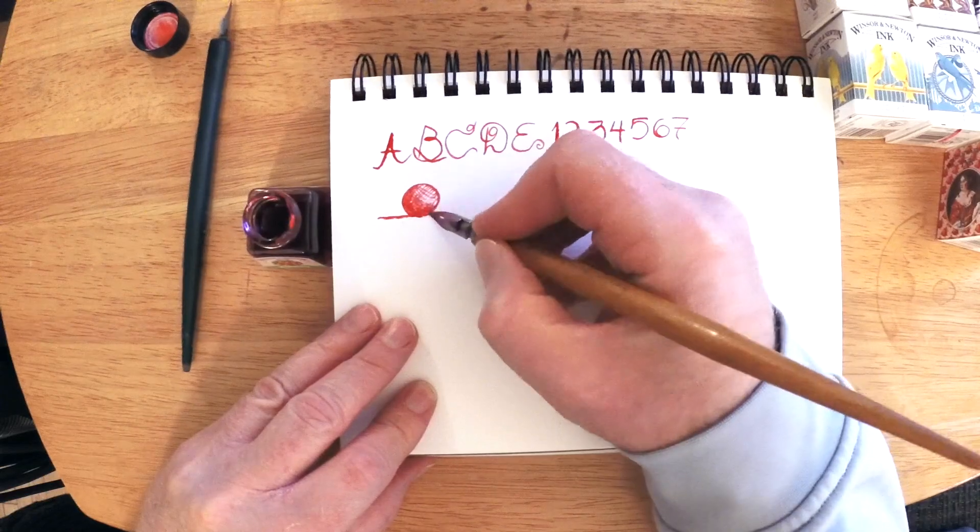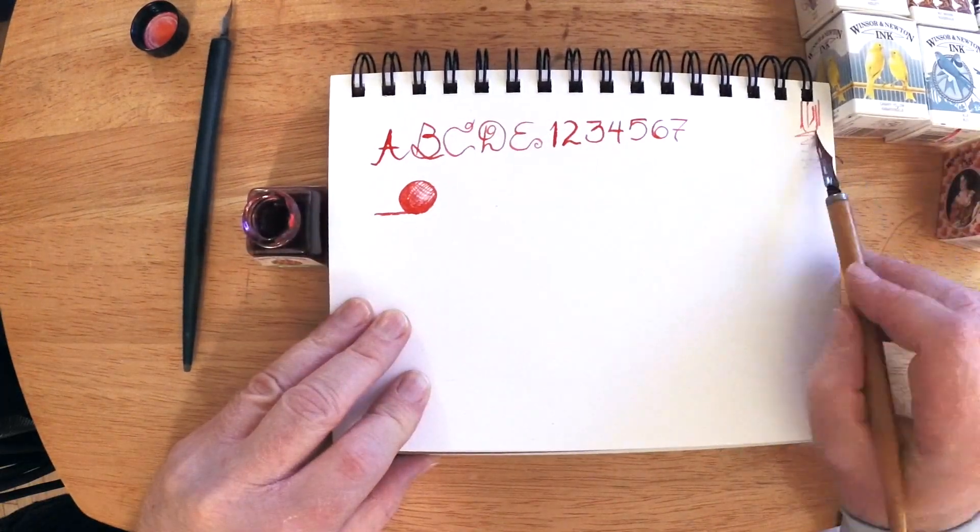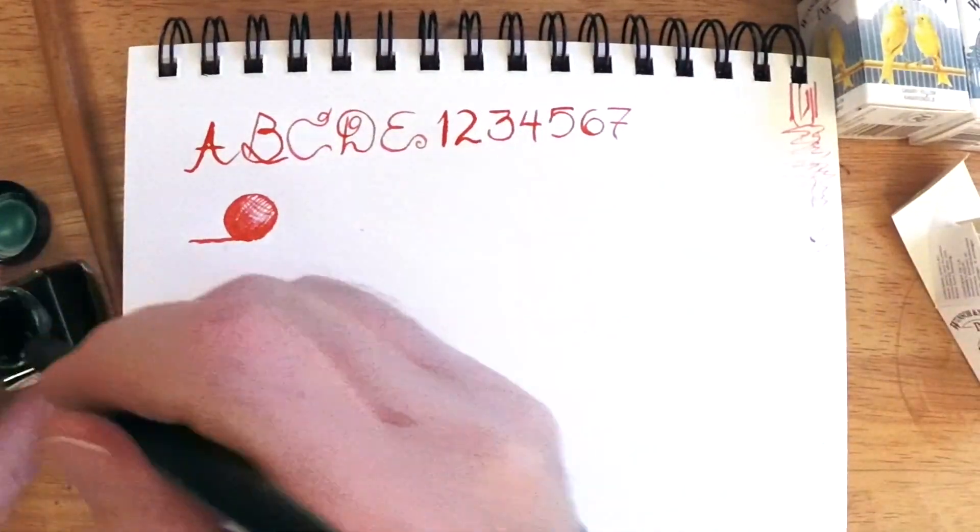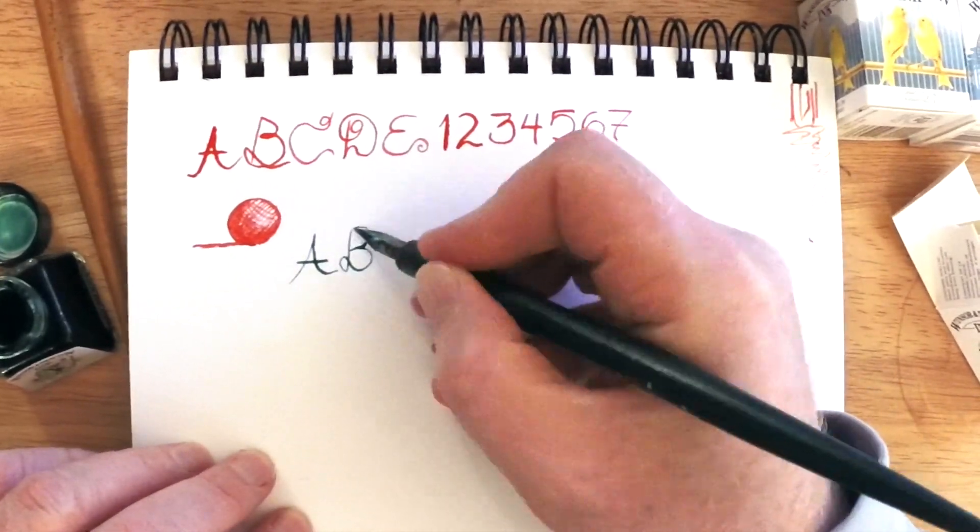So I'm just going to do a few letters and numbers here and try to draw a little sphere. These pens, lots of people drew with these pens. And in the old days when you had a quill and an inkwell, probably people thought, well, writing will never advance beyond this.